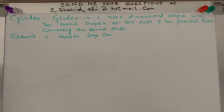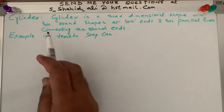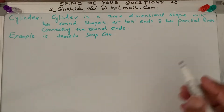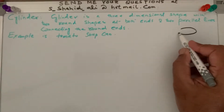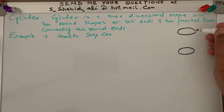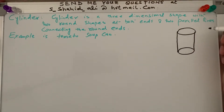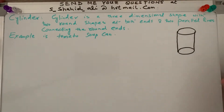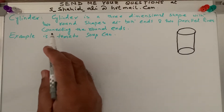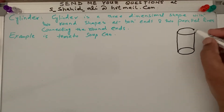What is a cylinder? A cylinder is a three-dimensional shape with two round shapes at both ends, and two parallel lines are joining these two round ends.